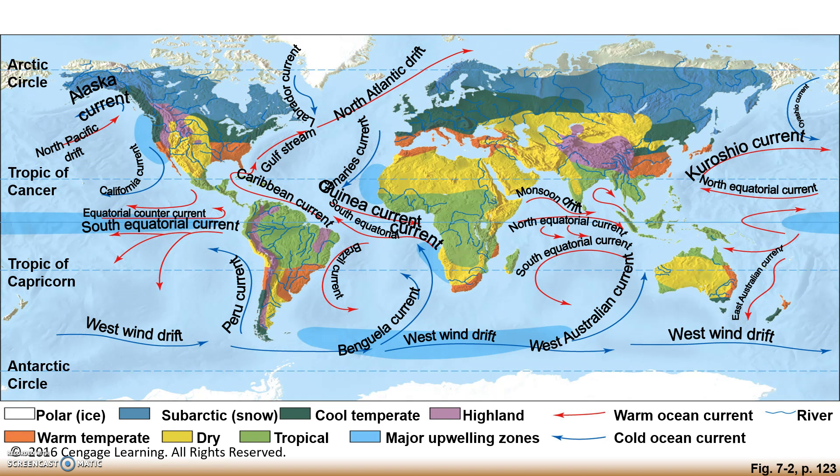This diagram depicts the different warm and cold ocean currents around the world, and these ocean currents have a direct influence on climate.